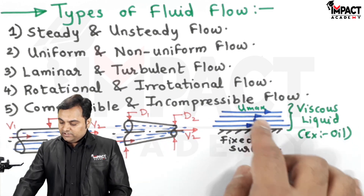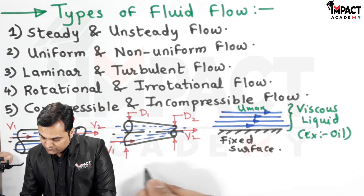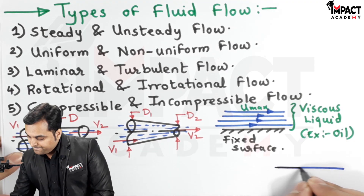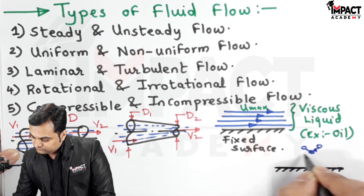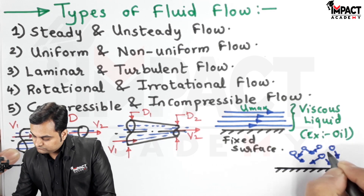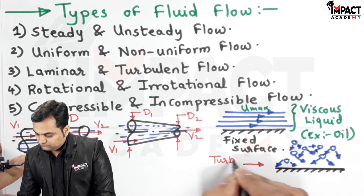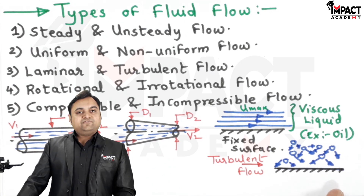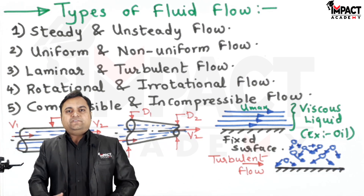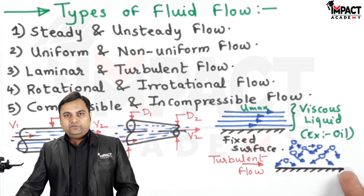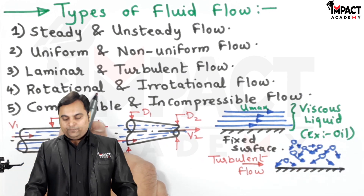In turbulent flow, the layers cross each other's path and there is intermingling of the fluids. The fluid molecules cross each other's path, resulting in a huge amount of turbulence. In turbulent flow, fluids are not flowing in the form of layers as in laminar flow.